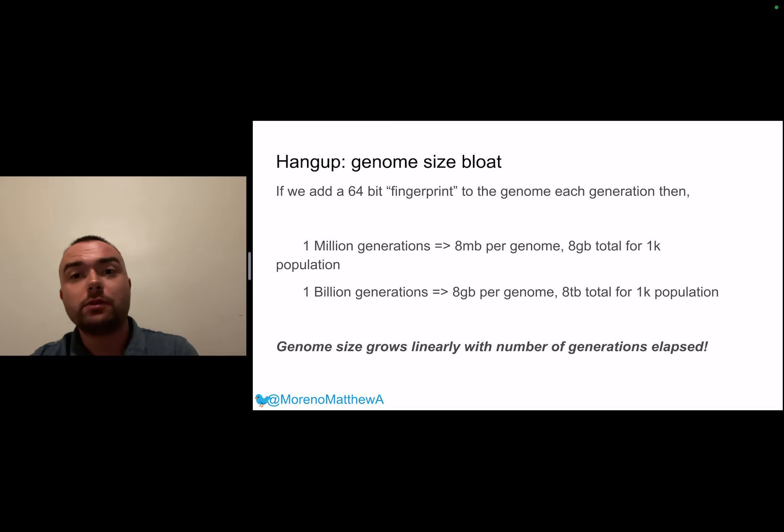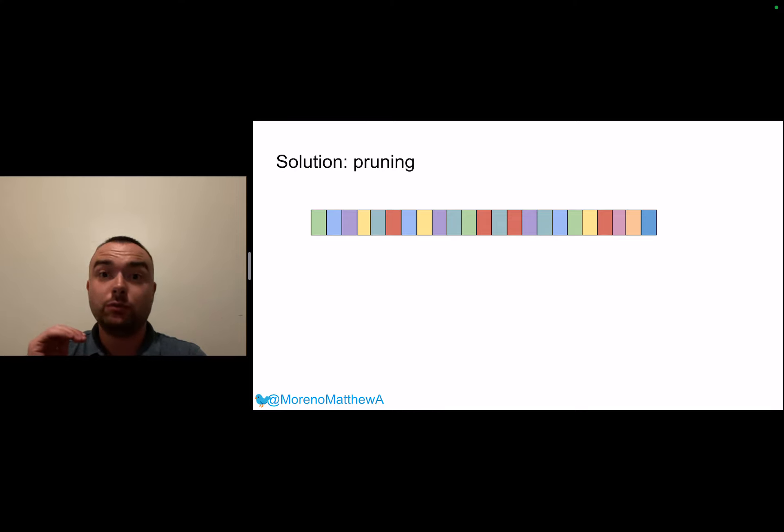Some of you probably have anticipated the major hang-up with this seemingly more clever approach, the hereditary stratigraphy approach, is this fact that the genome is growing as generations elapse. In digital evolution systems it wouldn't be unusual to see maybe on the order of hundreds of thousands or millions of generations and as you can see as these generations elapse and the genomes grow and grow suddenly we've got a lot of extra data that we're slinging around our simulation that's going to take up space.